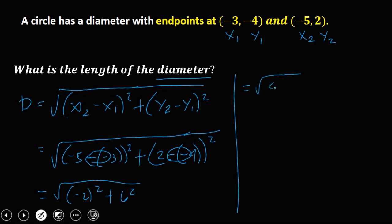So we have now (-2)² = 4, plus (6)² = 36, and 4 + 36 = √40.